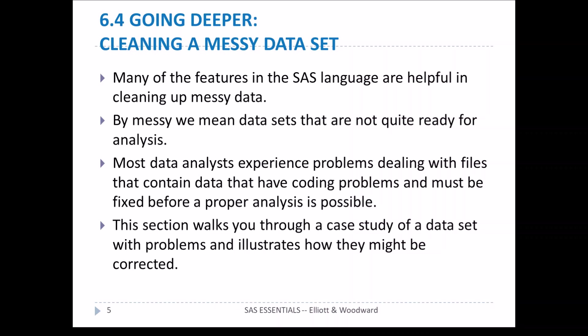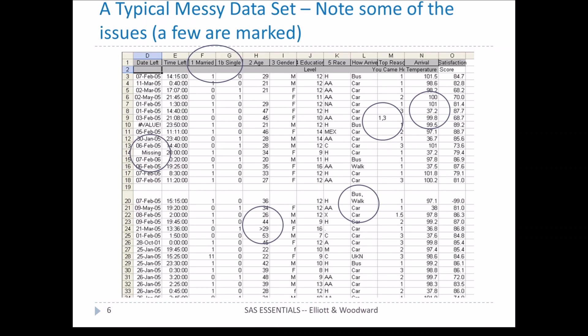This section walks through a case study of a data set with problems and illustrates how you might correct them. Here's a typical messy data set — actually pretty close to a data set I received one time. I changed some values to protect the innocent, but it's essentially the same. You can see it has errors, missing date values, and things like age greater than 29, which is not a proper age.